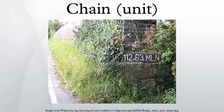A chain is a unit of length. It measures 66 feet, or 22 yards, or 100 links, or four rods. There are 10 chains in a furlong, and 80 chains in one statute mile.